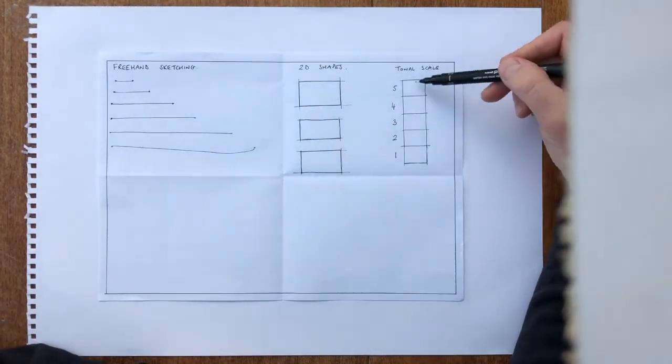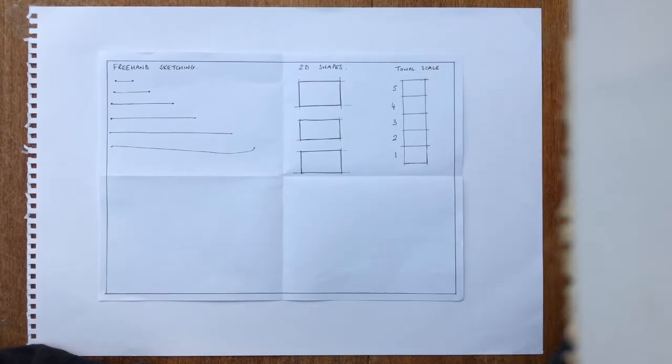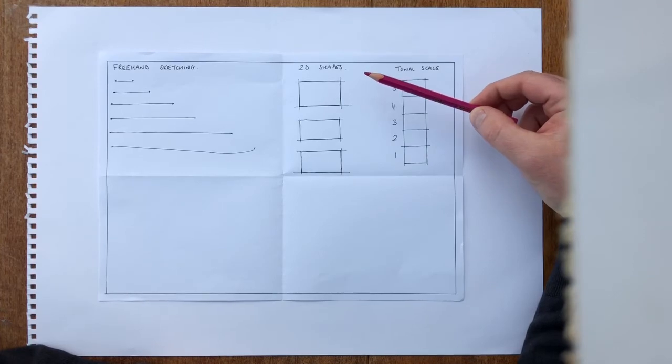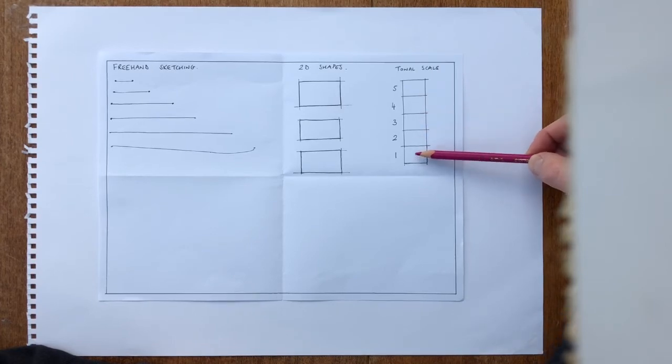Now tonal scale, well the first thing we need to discuss is what is tone. Tone is the strength of colour in this case. From this one coloured pencil, we'll be able to get five different tones. A dark, and then lighter tones all the way through to the lightest tone, where we've got number one here.